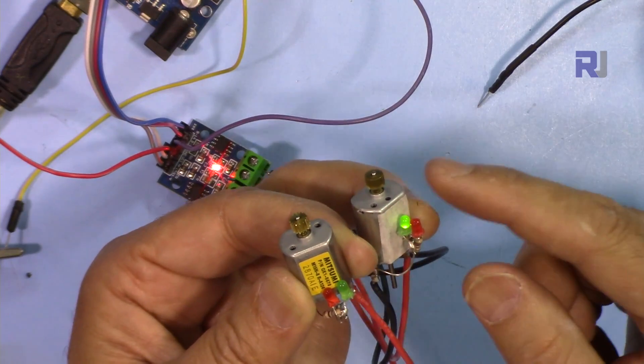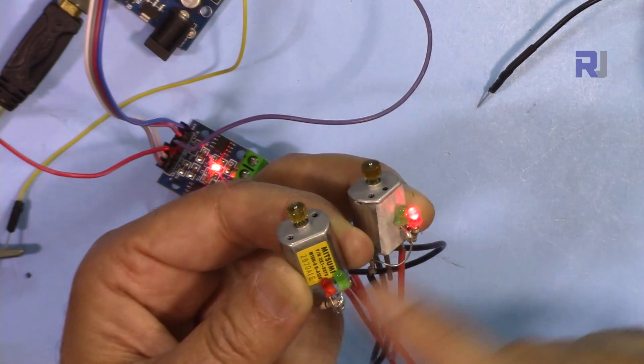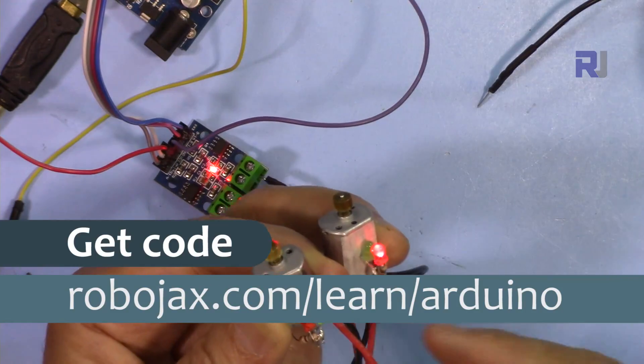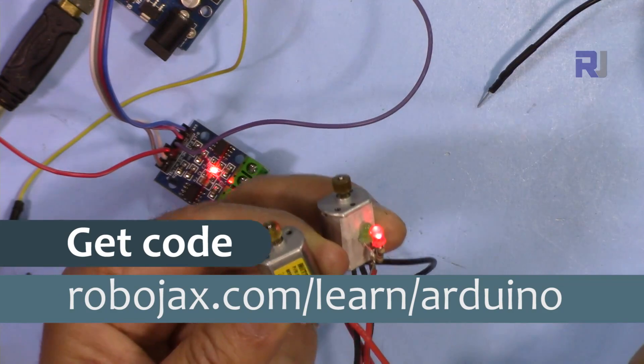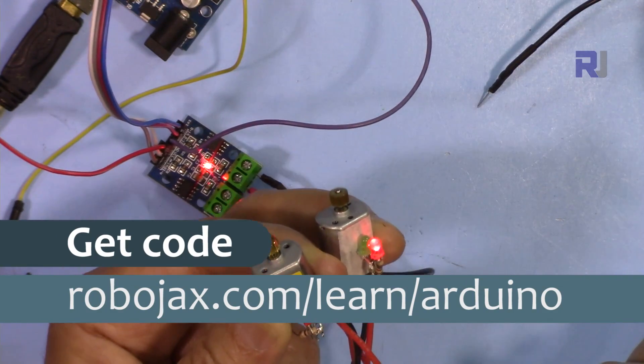As you can see, we can change the direction of rotation and we can switch or control each motor separately. You can get the code for this project by clicking the link in the description below which will take you to robojax.com/learn/Arduino.